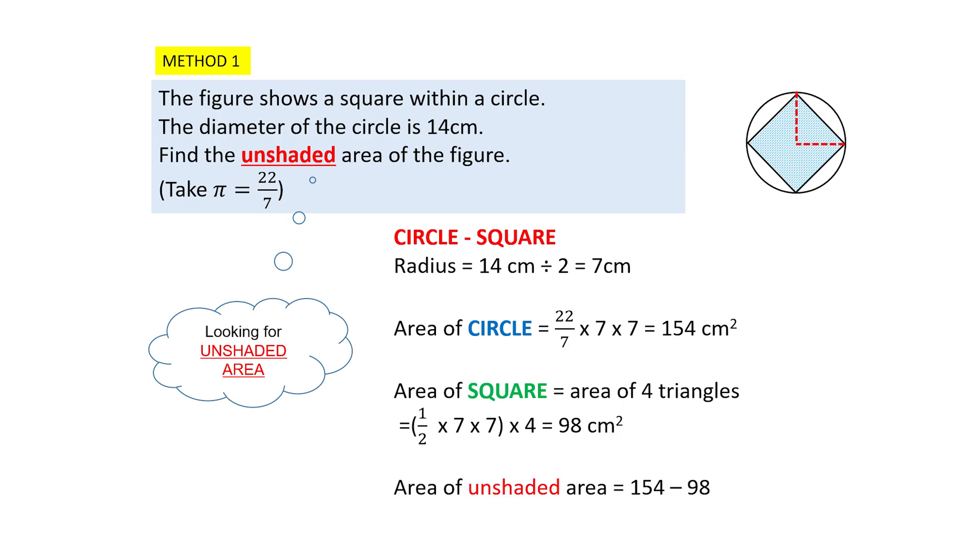To find the area of the unshaded area of this figure, you will take 154, which is the area of the circle, minus the area of the square. So 154 minus 98 will give you the answer.